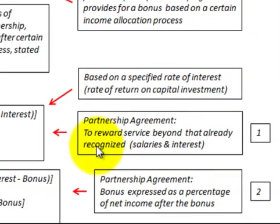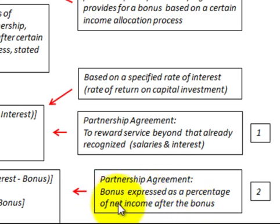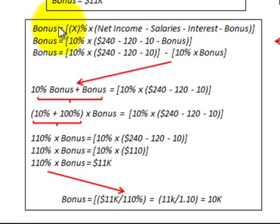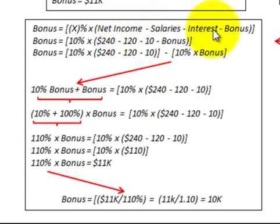Remember, Case 1 was based on recognized salaries and interest already included. Now let's look at the second case, where the bonus is expressed as a percentage of net income *after* the bonus. So the formula becomes: bonus equals the bonus percentage times net income minus salaries minus interest minus the bonus itself. This subtraction of the bonus is the key to this formula.